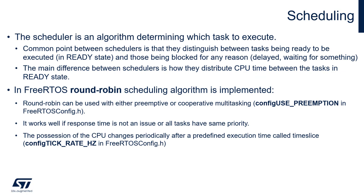Scheduling: the scheduler is an algorithm determining which task should be executed. Only one task can be executed at one time if we are considering a single-core microcontroller like STM32 devices. A common point between schedulers is that they distinguish between tasks being ready to be executed — in ready state — and those being blocked or suspended, which are not taken into consideration. The main difference between schedulers is how they distribute CPU time between tasks in ready state. Within FreeRTOS, there is a round-robin mechanism implemented, which can be used with either preemptive or cooperative multitasking depending on the configUSE_PREEMPTION constant set in FreeRTOSConfig.h.